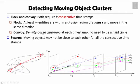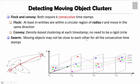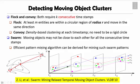However, both flock and convoy are still rigid because they require k consecutive timestamps. Consider animal movements: at certain timestamps, animals may not be closely clustered — they may spread out to graze or do other things. We can relax the k consecutive timestamp requirement to allow that at certain timestamps they are far apart, while at other timestamps they move closely together. We define such a pattern as swarm. Swarm means moving objects do not need to be close together at all consecutive timestamps. Finding such patterns may be more costly than finding flocks and convoys because the pattern is more relaxed.